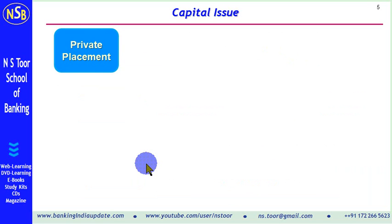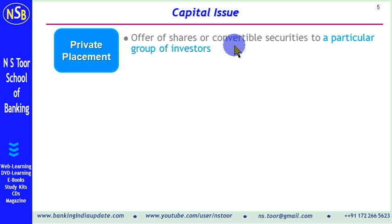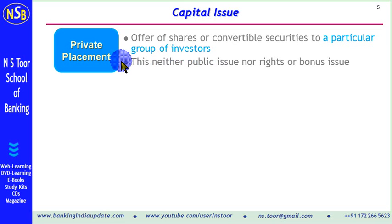The last type is private placement. Private placement is an offer of shares and convertible debentures to a particular group of investors. Instead of offering shares to the public at large, when the offer is made only to a particular group of investors, it becomes private placement. Private placement is neither a public issue, nor a rights issue, nor a bonus issue.